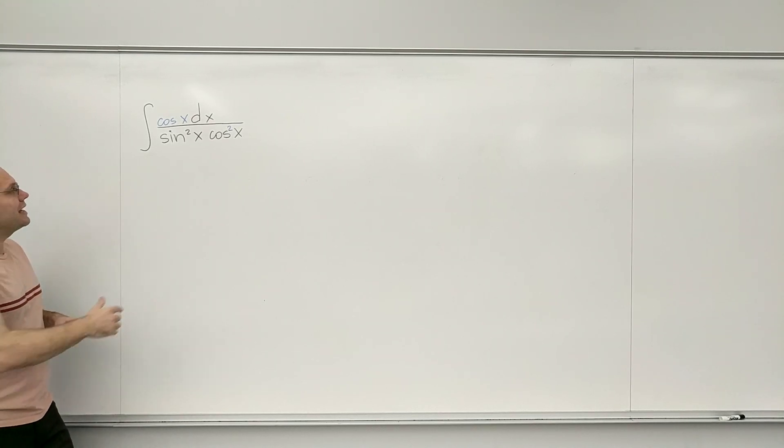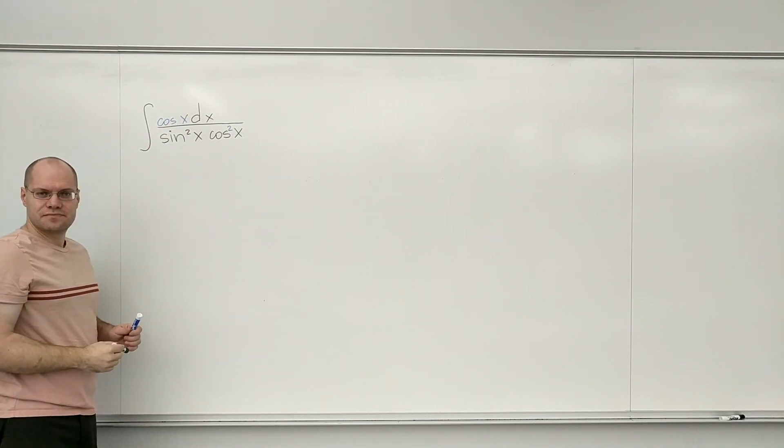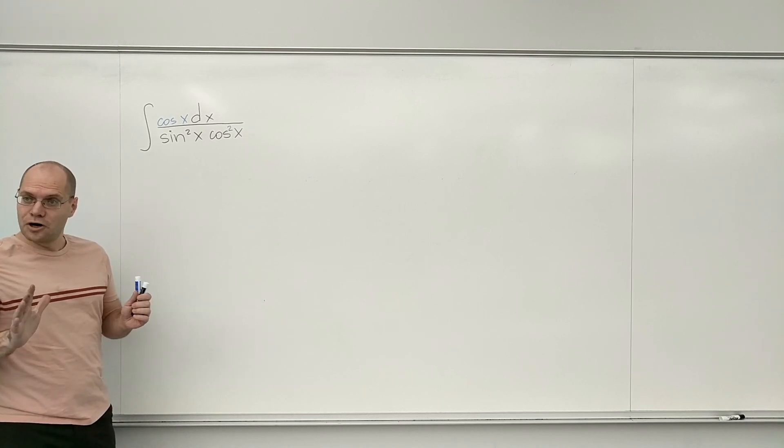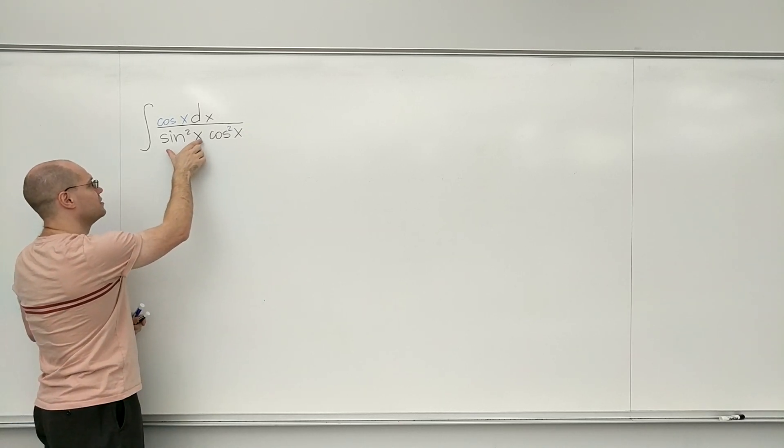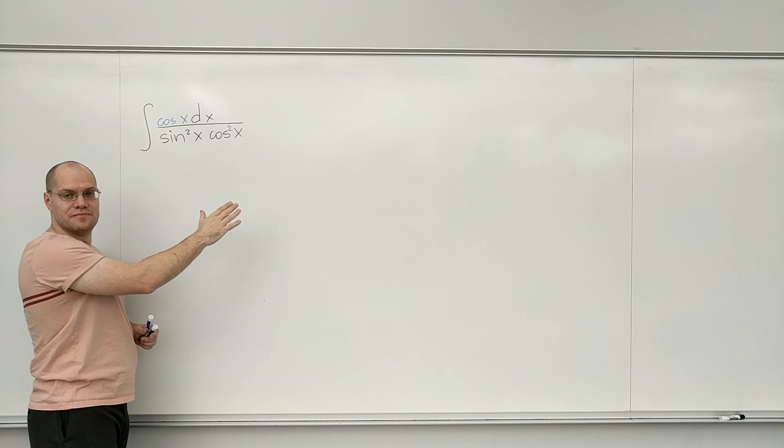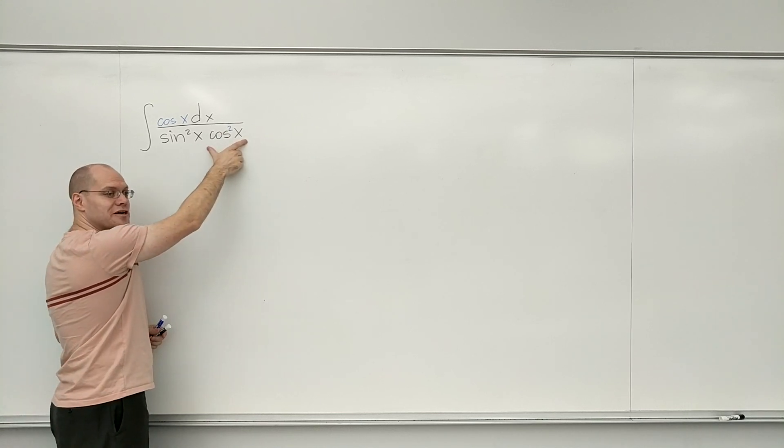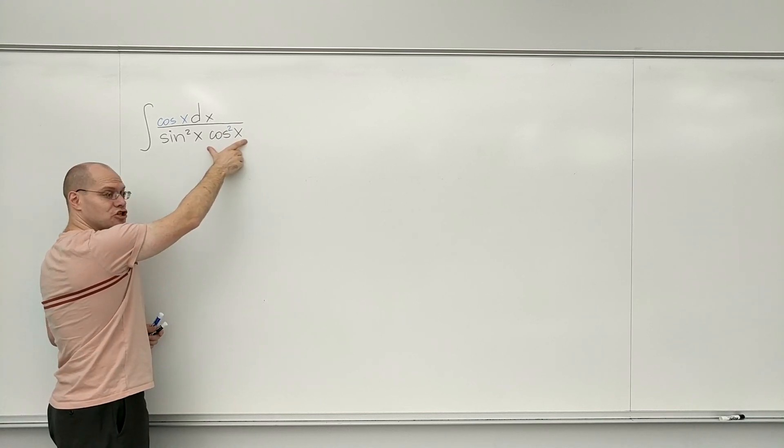And so now I have d sine of x. And that's, for a moment, still a problem, because I have sine squared of x. That's good. But I also have cosine squared of x, and that seems like it's not good.